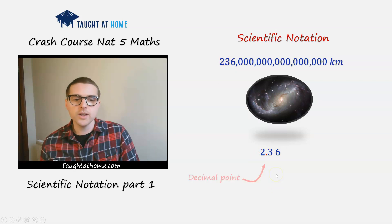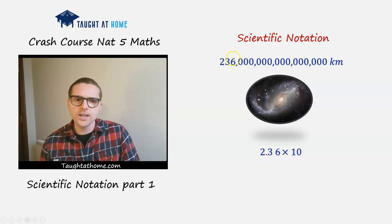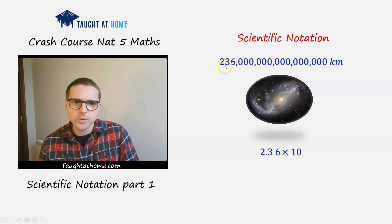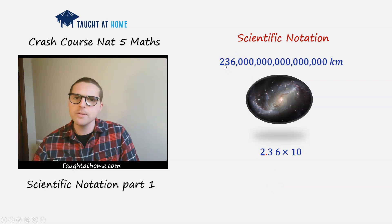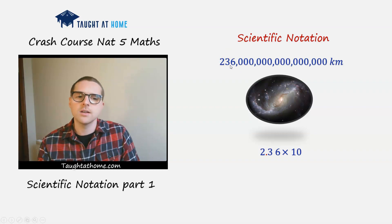Now we've moved the decimal point there because now we're going to multiply it by 10. And how many times we multiply it by 10? So let's have a think. The decimal point is now between this two and three. If we multiply it by 10 once, so 10 to the power of one, it's going to move one place to the right and it's going to go between the two, the three and the six.